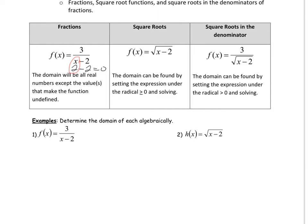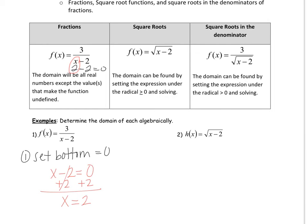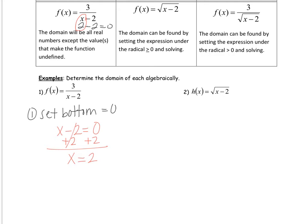The process, when it's not so easy to just see 2, is to set the denominator equal to 0 and solve. This example is very simple, but you're going to have ones that are not as simple, so you want to make sure you understand the process. Set the denominator equal to 0 and solve. We add 2 on both sides and we get x equals 2. The domain will be all real numbers — this is the symbol for all real numbers, a little R with two lines — except when x equals 2.